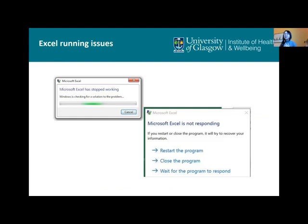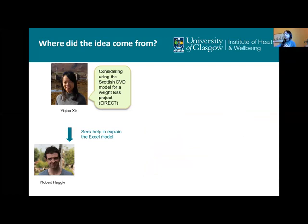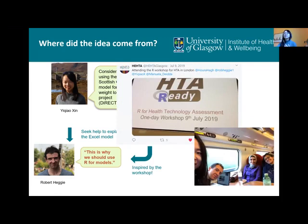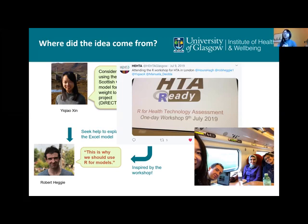Juggling between the sheets to find cell links and understand the formulas just takes so much time. Besides, because the model had been adapted a few times by several different hands, in some places the layout is not very clear. And sometimes Excel was not very happy. After half an hour, Robert said, "This is why we should use R models" — just after we attended the R4HD workshop last year at UCL. This exercise was inspired by that workshop.